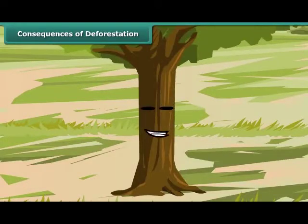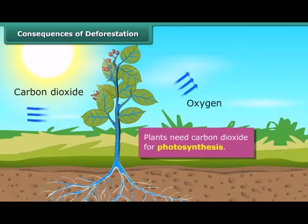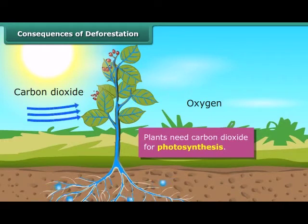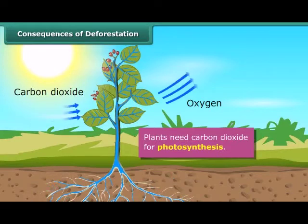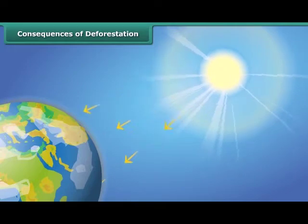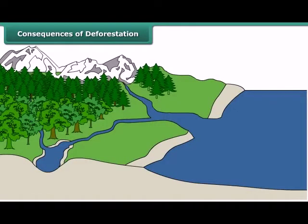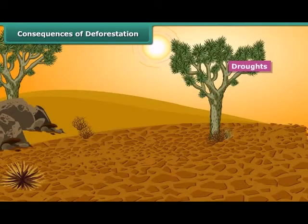You have already studied about deforestation and its various causes. Now let us discuss some of its consequences. Plants need carbon dioxide for photosynthesis. Fewer trees would mean that less carbon dioxide would be used up, resulting in its increased amount in the atmosphere. This will lead to global warming as carbon dioxide traps the heat rays reflected by the Earth. The increase in temperature disturbs the water cycle and may reduce rainfall, which could cause droughts.